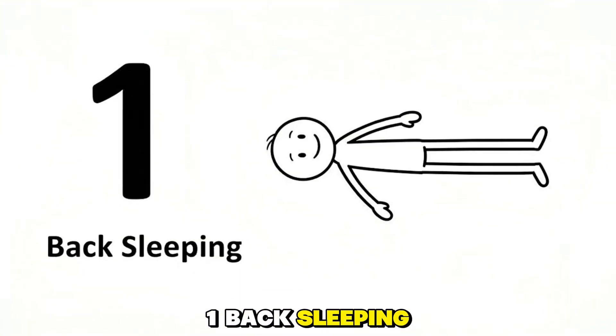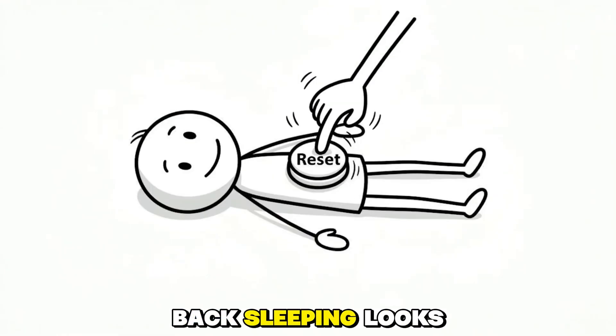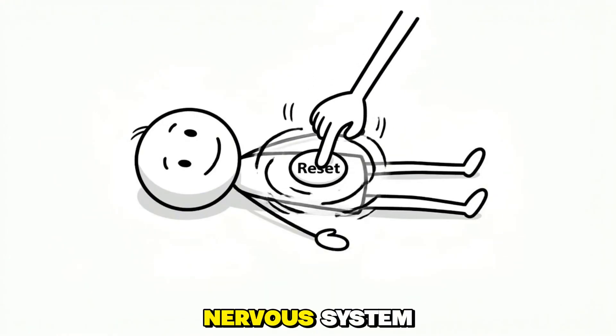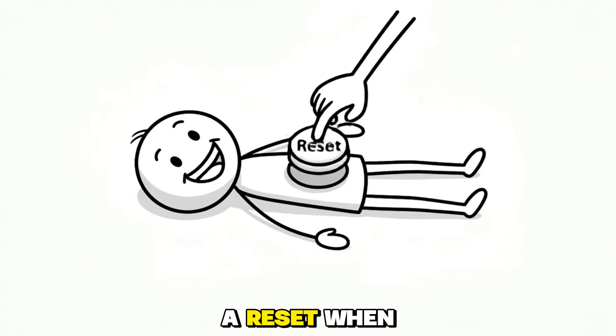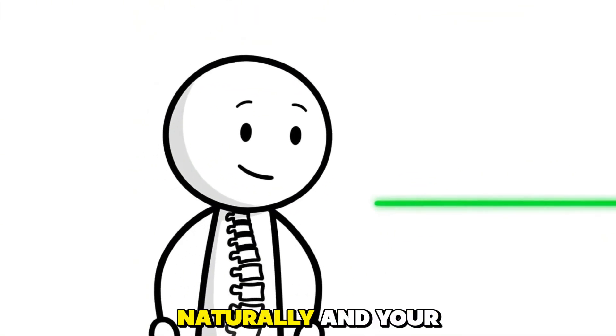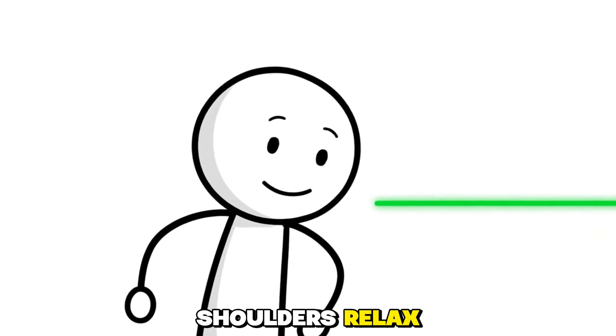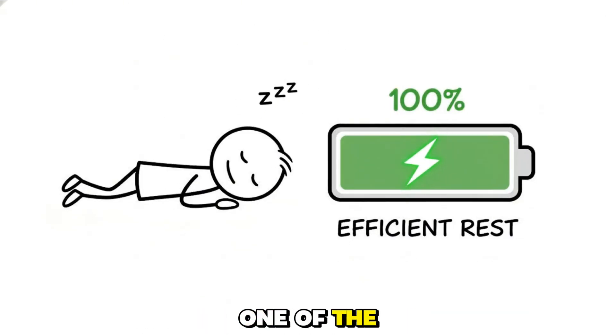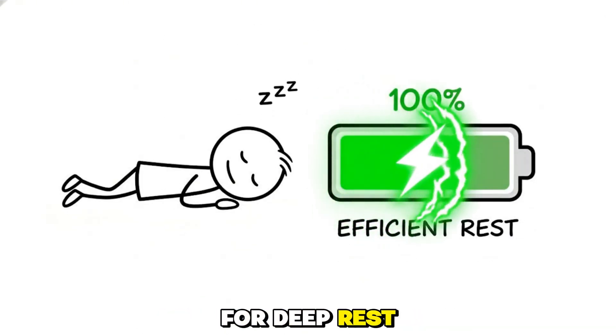Back sleeping, the reset mode. Back sleeping looks simple, but for your nervous system it acts like a reset. When your spine stays neutral, your neck aligns naturally and your shoulders relax. Your body enters one of the most efficient positions for deep rest and repair.